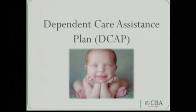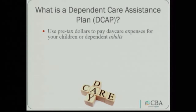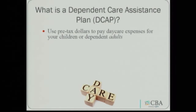We'll move on to the Dependent Care Assistance Plan. This plan allows you to set aside money for your out-of-pocket daycare expenses while you and your spouse, if applicable, are working or looking for work. You can also use those funds to pay for adult dependent expenses — such as an elderly or disabled person who lives with you and is your IRS tax dependent. If you pay for custodial expenses for someone to be cared for while you're working, those expenses can be sheltered through this benefit and you can save taxes on them.